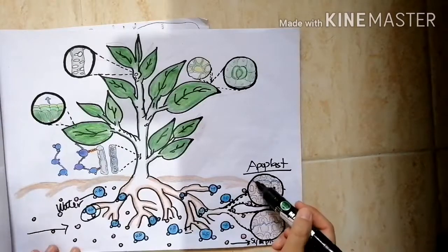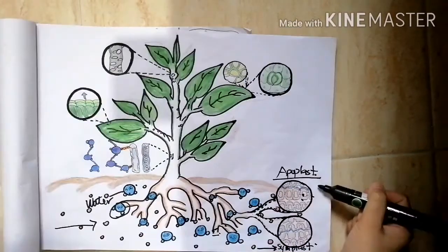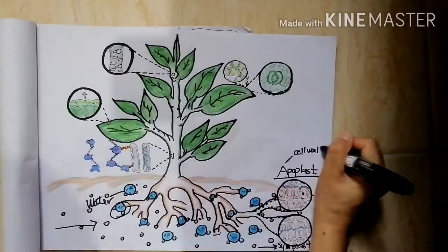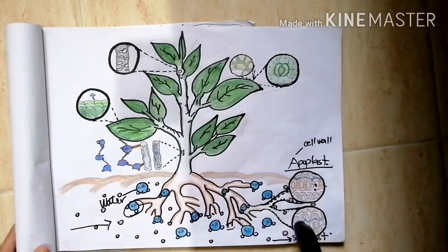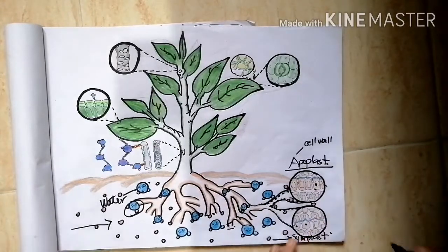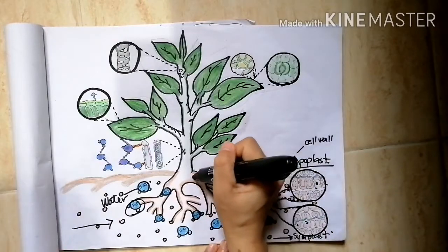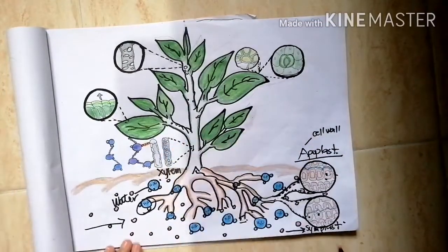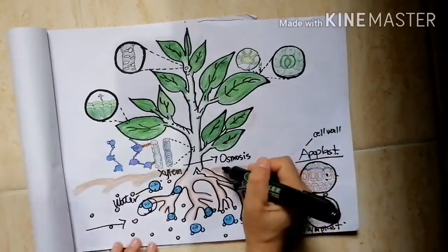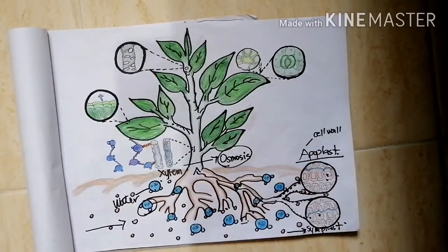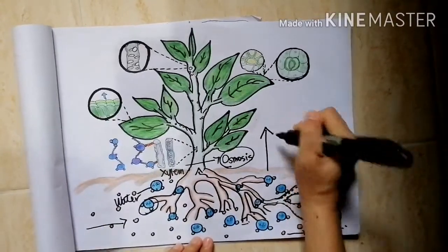The apoplast pathway where water molecules move through cell wall without any involvement of any membranes. And the symplast pathway where the movement of water molecules is from cell to cell through plasmodesmata to xylem by a process called osmosis. Osmosis is the net movement of water molecules through a semi-permeable membrane from an area of higher to an area of lower water potential.